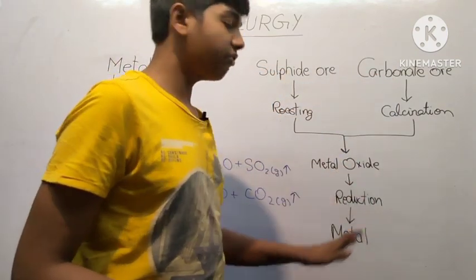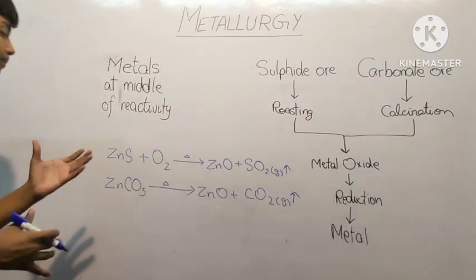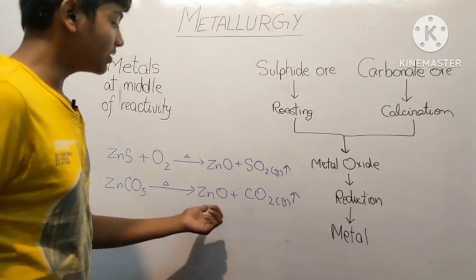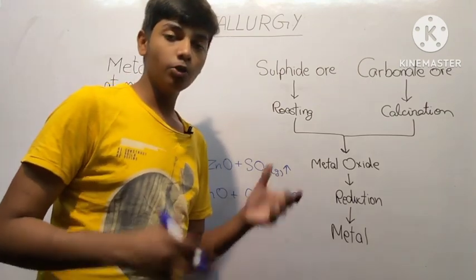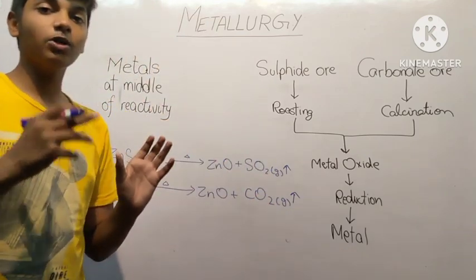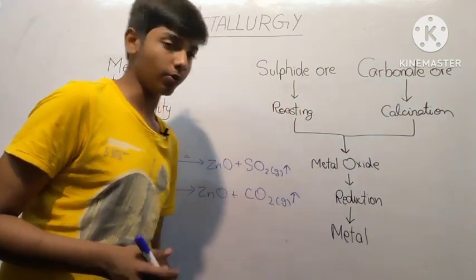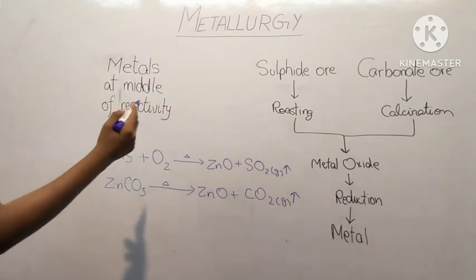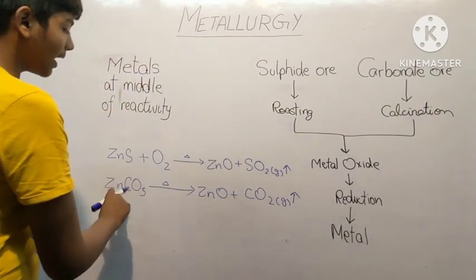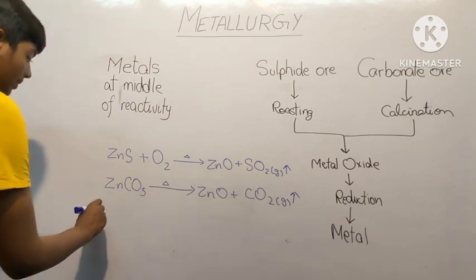Basically it is easier to reduce ZnO or metal oxide to the metal. Meaning it is easier to extract the metal from metal oxide as compared to sulfide ore or carbonate ore. Hence prior to reduction we convert sulfide and carbonate ore to metal oxide.